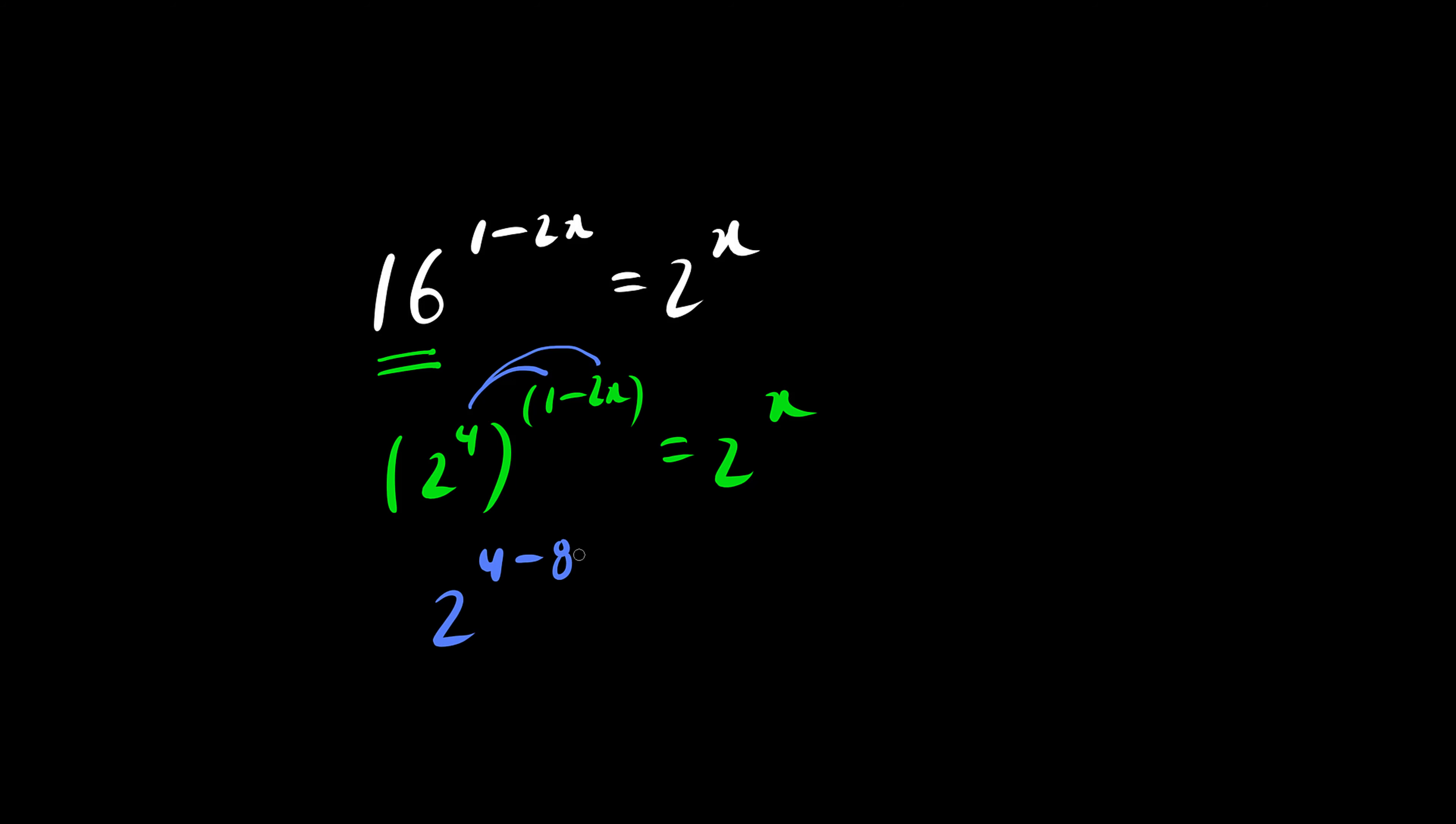So we have 4 minus 8x equals 2 to the x, and because the bottoms are the same, so must be the tops. So we can equate the exponents.